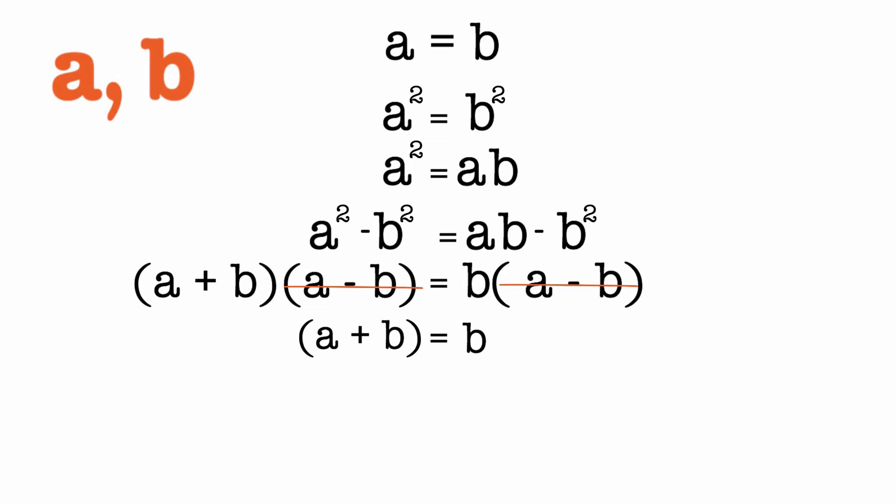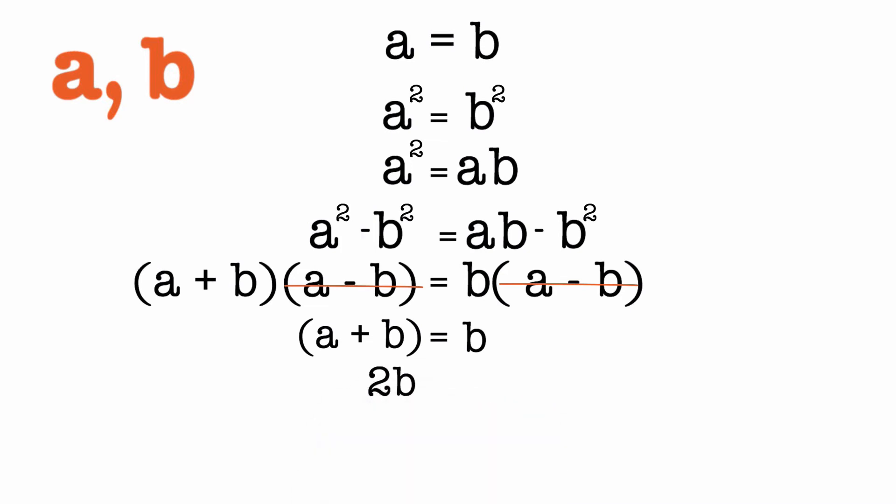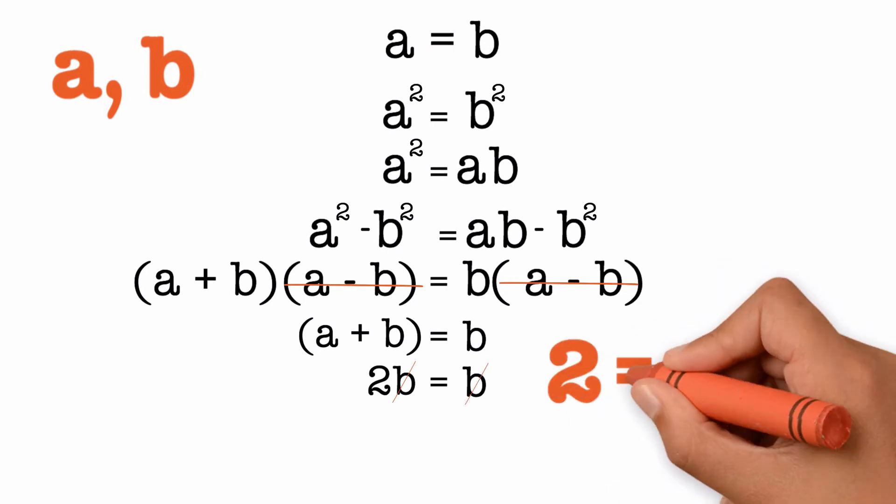But we started off by saying that A equals B. So A plus B can be written as 2B. So we have 2B is equal to B. And cancelling out the Bs we get 2 is equal to 1.